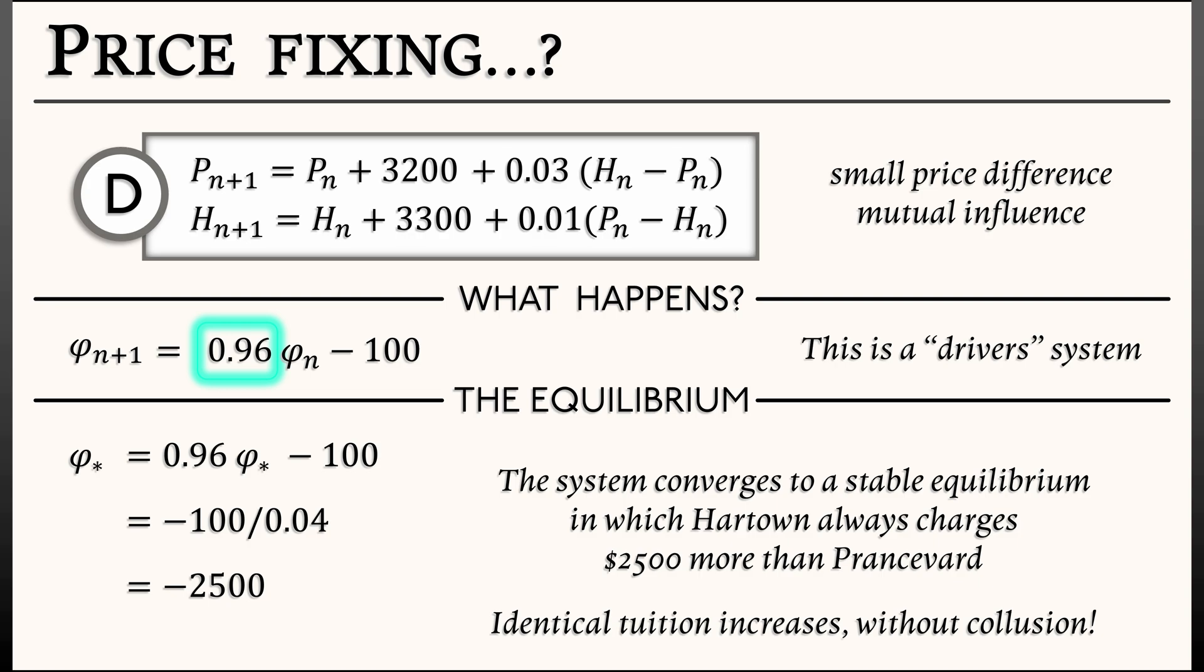Now, notice there's no collusion. There's no collaboration here. Each college has its own natural price increase, and they're different. But a small influence where they look at each other and adjust their prices just a tiny bit, that's enough to drive the system into a stable equilibrium where it's as if they are colluding in order to fix the tuition.